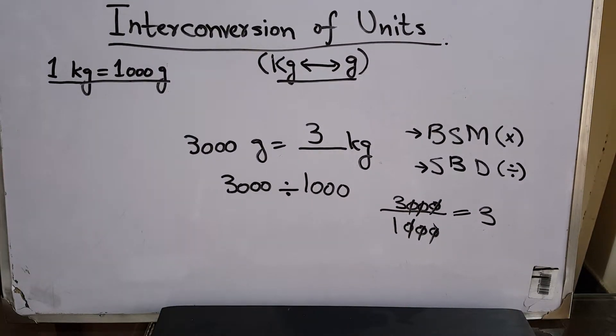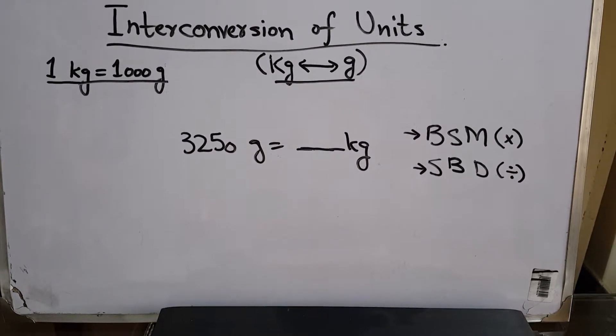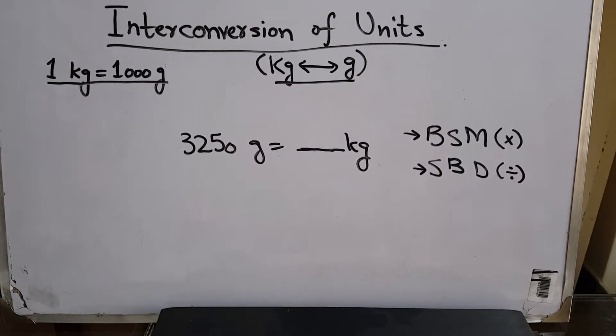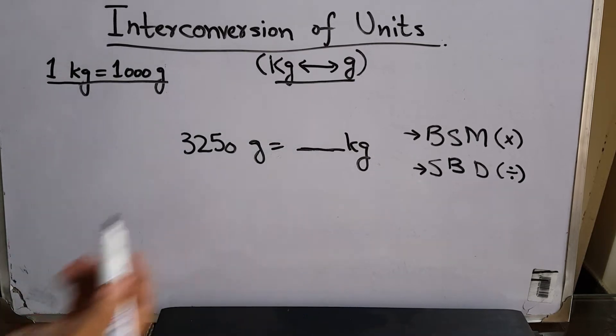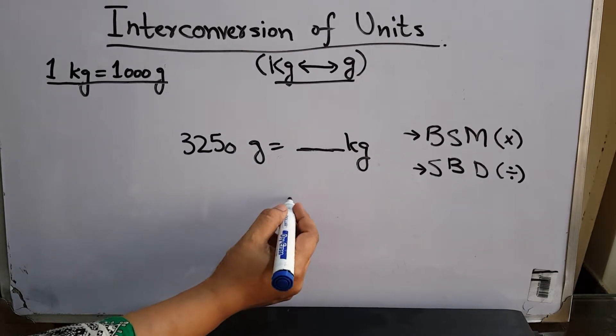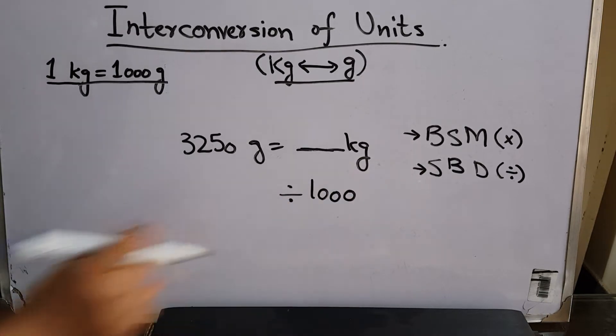Let's take one more example. You want to find out: 3,250 grams will be equal to how many kg? We already know you're going from smaller to bigger units, so we are going to divide using the SBD relationship. We will be dividing the given number, 3,250, by 1,000.